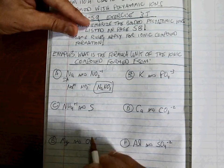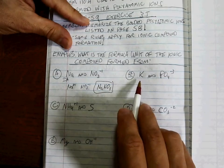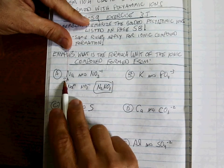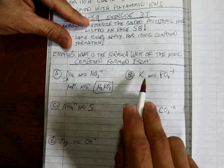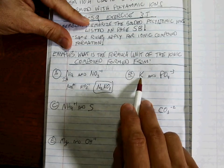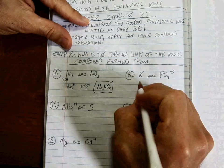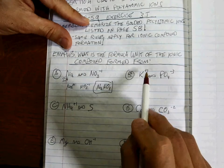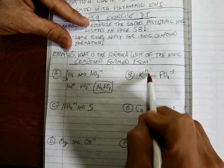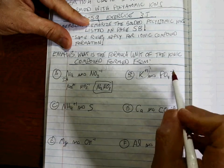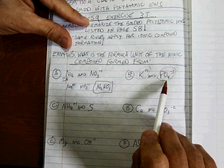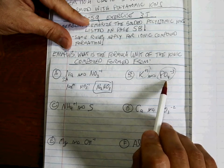Now let's go with part B. Potassium is also in Group 1A, so it's going to make a +1 as well. If we have a +1 cation and a -3 anion, how do we put these together?